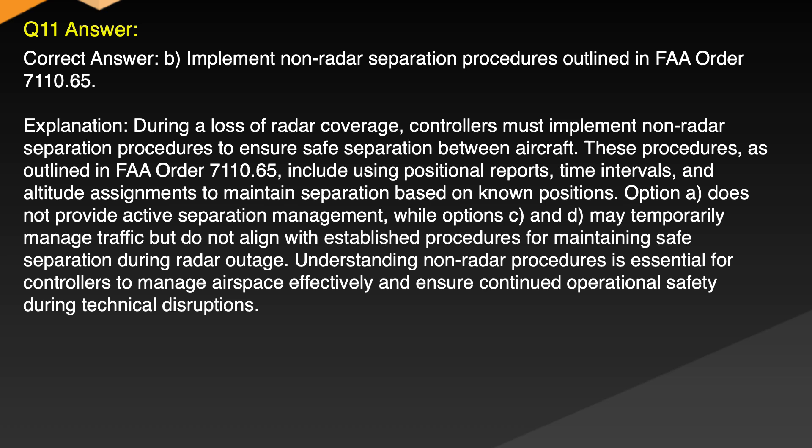Explanation: During a loss of radar coverage, controllers must implement non-radar separation procedures to ensure safe separation between aircraft. These procedures, as outlined in FAA Order 7110.65, include using positional reports, time intervals and altitude assignments to maintain separation based on known positions. Option A does not provide active separation management, while options C and D may temporarily manage traffic but do not align with established procedures for maintaining safe separation during radar outage. Understanding non-radar procedures is essential for controllers to manage airspace effectively and ensure continued operational safety during technical disruptions.